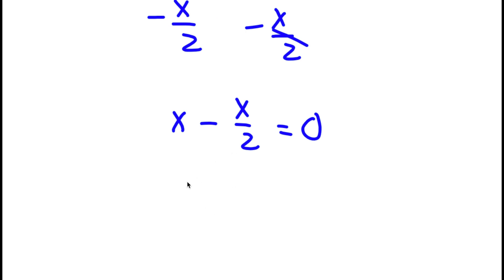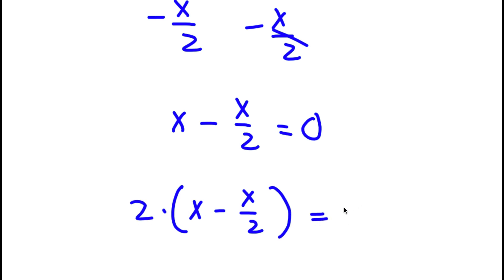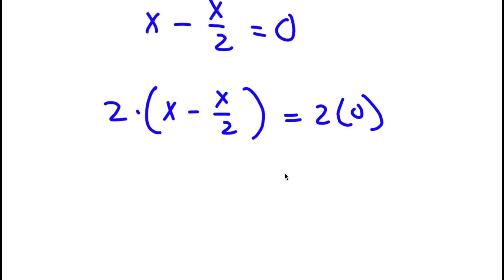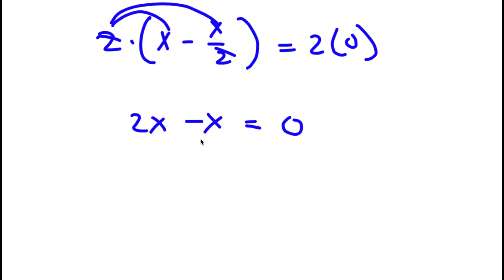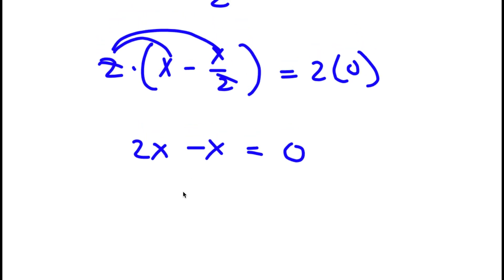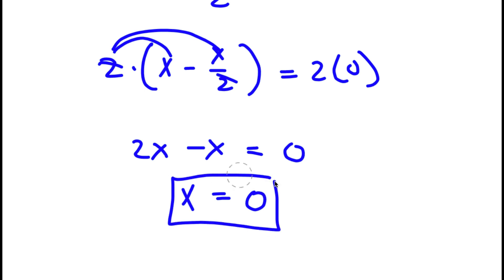Now I'm going to multiply both sides by 2. So I have x minus x over 2 times 2 is equal to 2 times 0. I'm going to distribute the 2 to all terms in my parentheses. 2 times x is simply equal to 2x, and 2 times negative x over 2 — the 2s cancel out, so all I'll be left with is negative x. This equals 2 times 0, which is 0. So I have 2x minus x is equal to 0. 2x minus x is simply x. So x is equal to 0.